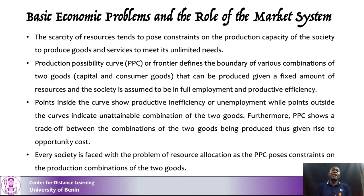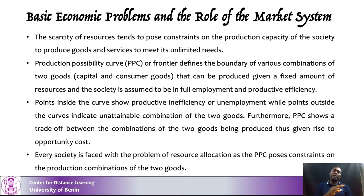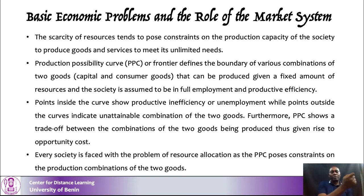The production possibility curve gives us a better way to understand scarcity. When solving your production possibility curve, you are at the same time trying to solve the scarcity problem — assuming you have capital goods and consumer goods within the economy. The production possibility curve tells you there is a boundary the economy must attain, meaning the economy is utilizing its resources at the full employment level. The economy must then decide which of these items to produce more of.